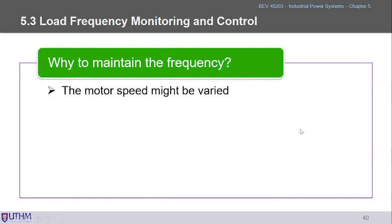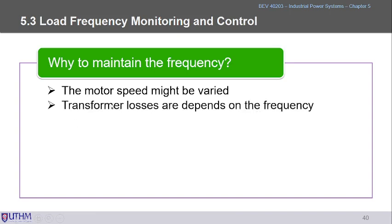Maintaining frequency is critical because motor speed is related to time, and time is 1/frequency. Frequency problems cause issues in time-related control, including motor speed variations. Transformer losses also depend heavily on frequency — especially iron losses, hysteresis losses, and eddy current losses, which are proportional to the square of frequency.